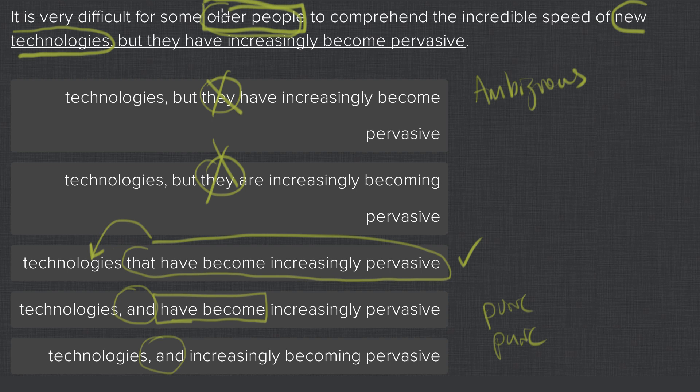So you wouldn't say 'older people have become increasingly pervasive.' The same thing is happening in the last option. It says 'older people increasingly becoming pervasive.' Both of those are wrong also.